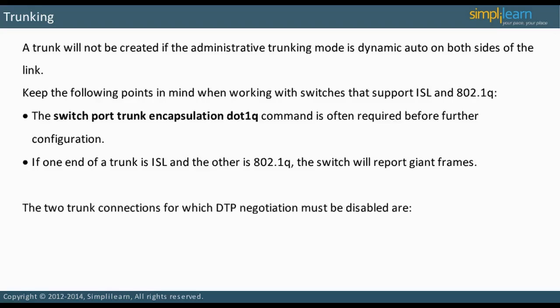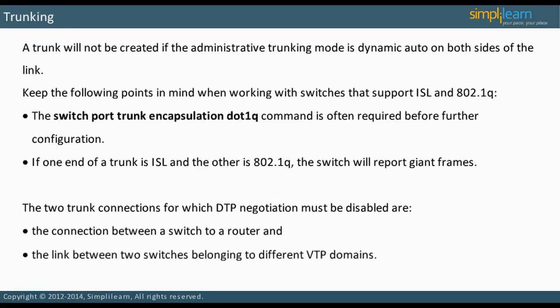There are two trunk connections that require DTP negotiation to be disabled. The first is a connection between a switch to a router. The second is a link between two switches belonging to different VTP domains, unless one is the default null domain. In the next slide, we will review troubleshooting switch interfaces.